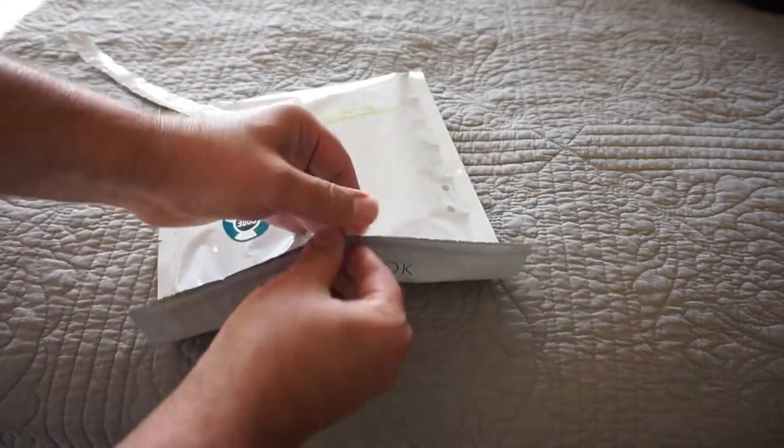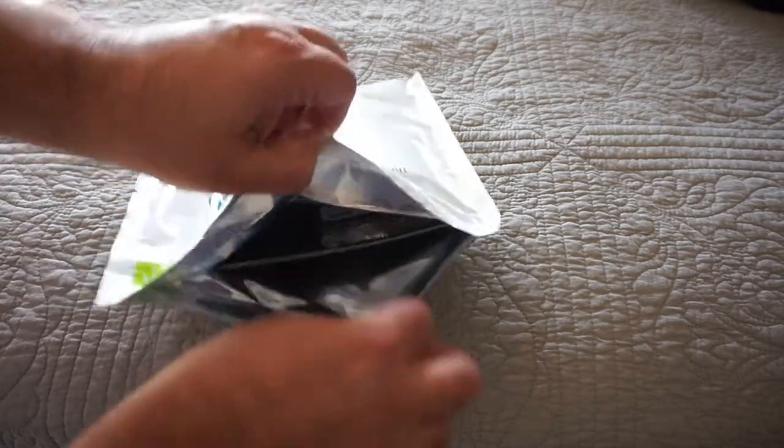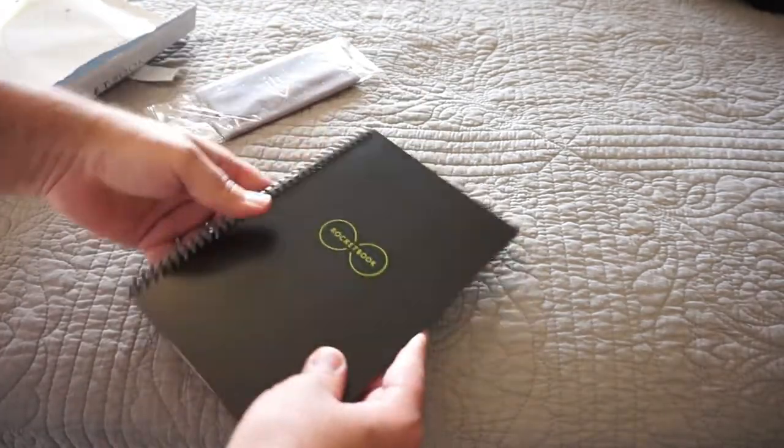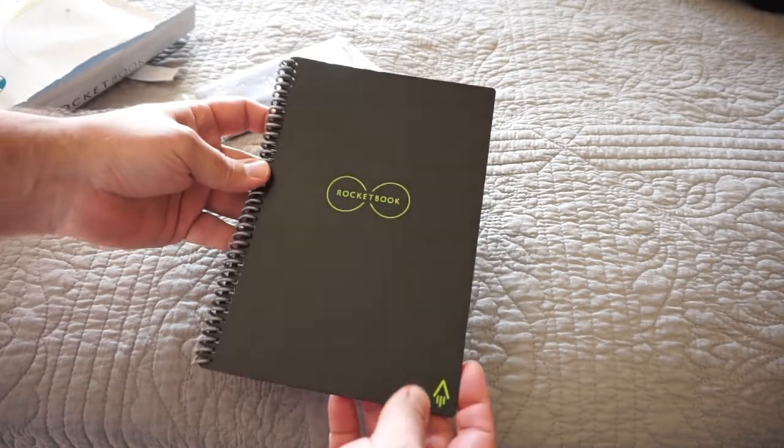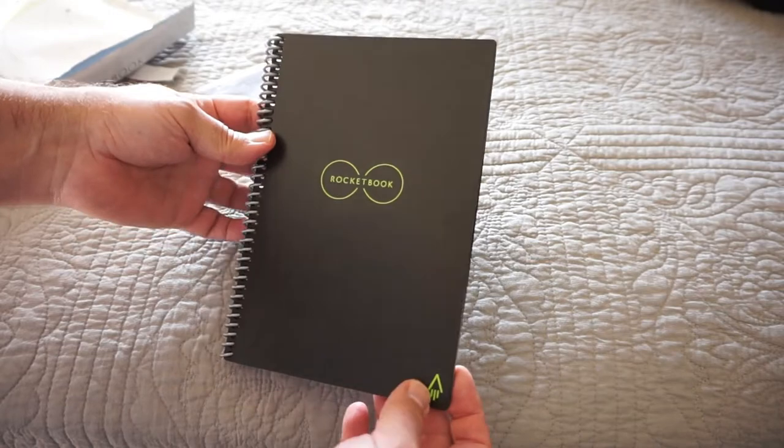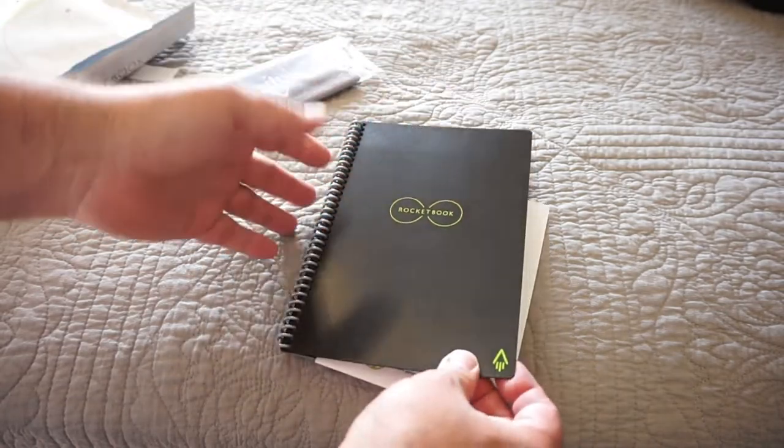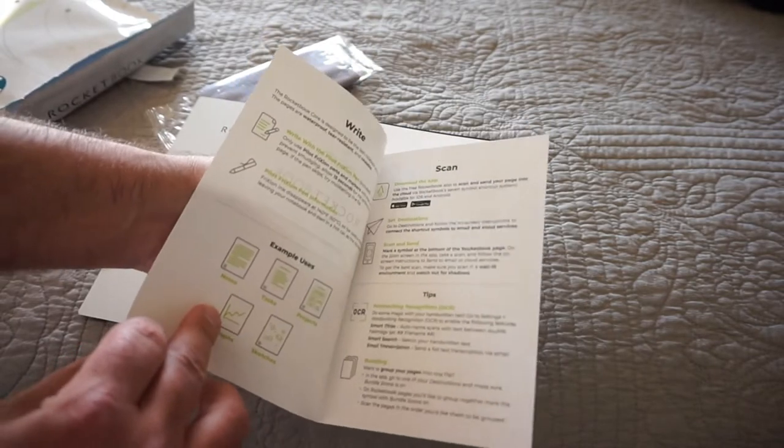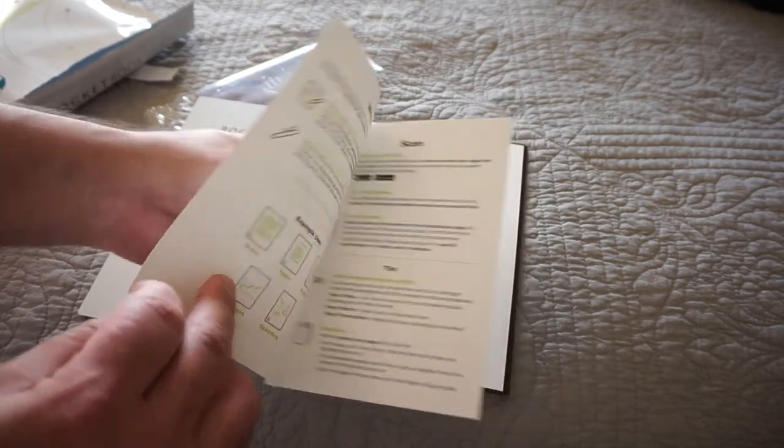Let's go ahead and open it up and see what it looks like. I'm really kind of interested about the texture of these pages to see what they're like to write on. Here's your actual book size. Again, I got the executive size, which is maybe about two-thirds the size of a standard notebook page, but I wanted something smaller for when I walk around. You've got an instruction manual that comes with it that tells you what to do, how to write, how to scan, example of uses.